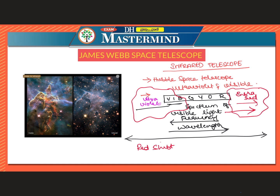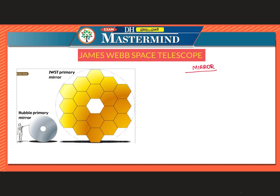The image on screen is the Monkey Head Nebula, captured by Hubble Space Telescope — one version in the visible spectrum and another in the infrared range. This demonstrates that Hubble Space Telescope possessed only limited infrared capability.